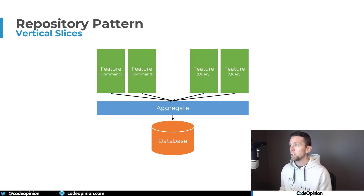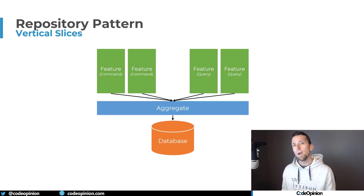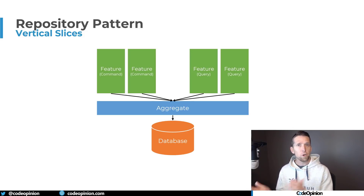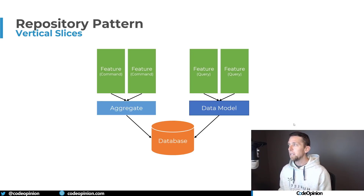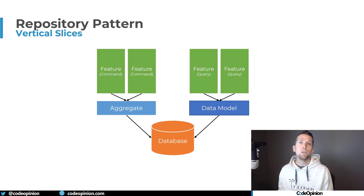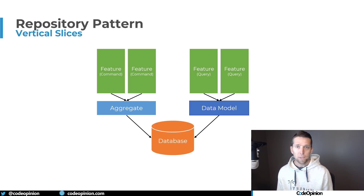In vertical slices, a command or set of commands and queries represent a feature — it could just be an individual command is a feature. If I were using a repository returning domain objects and then using the database, what you realize is that on the query side you don't need the domain objects, you just want the data. On the command side you use a repository to get an aggregate, but on the query side you don't need the aggregate — you simply want to get the data from a particular data model.